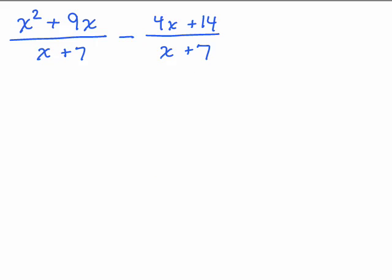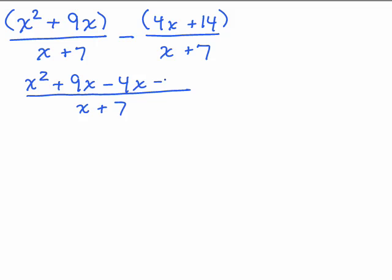Here's another example. I have a common denominator, so I could write the denominator x plus 7. And now I have to subtract that whole quantity up here. So we're going to have x squared plus 9x minus 4x and minus 14.